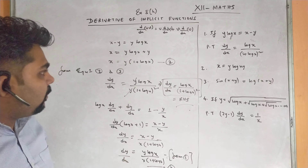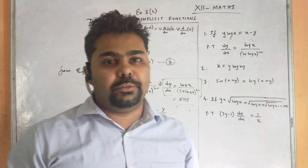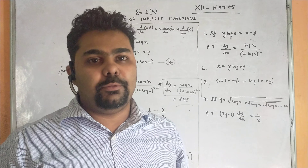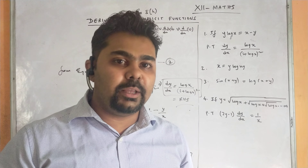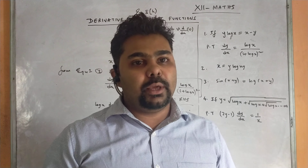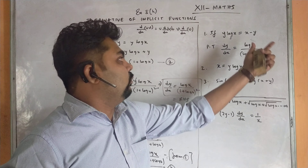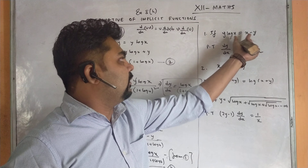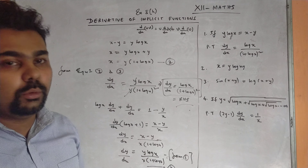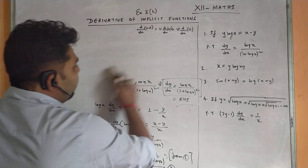In this type of question, first differentiate both sides; where the dy/dx term appears, take it to the other side and factor it out. If cross-multiplication is needed, do that, then check whether it is proved. If not, use the first equation to substitute and simplify. This is the general approach.